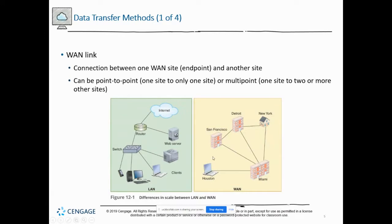Here's an example: you have a LAN on the left — a typical local area network — and a LAN on the right showing a point-to-point connection between Miami and Houston, but potentially point-to-multipoint to San Francisco, Detroit, and New York. It can be multipoint — one site to two or more — or a point-to-point.